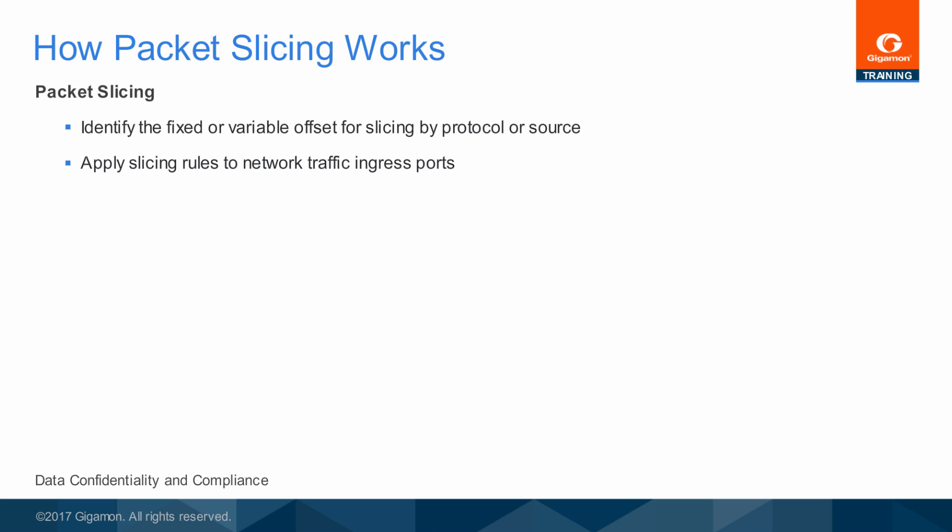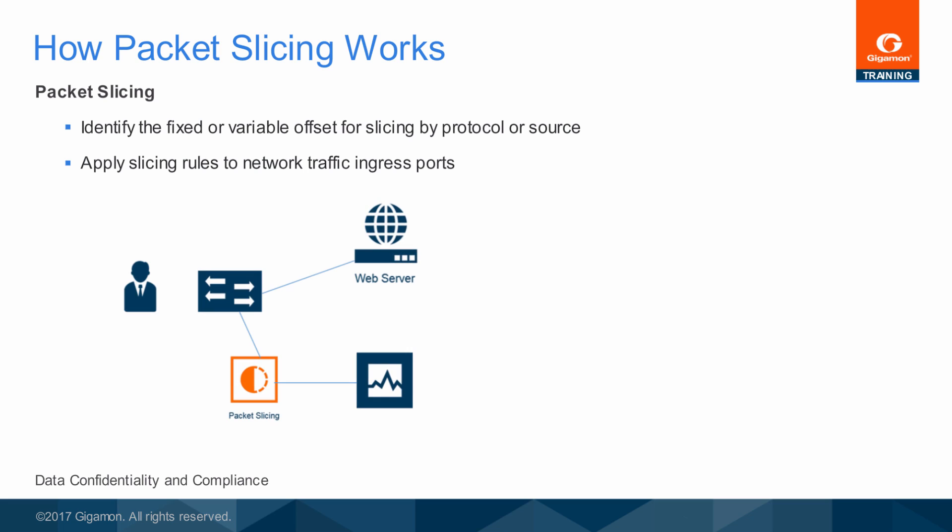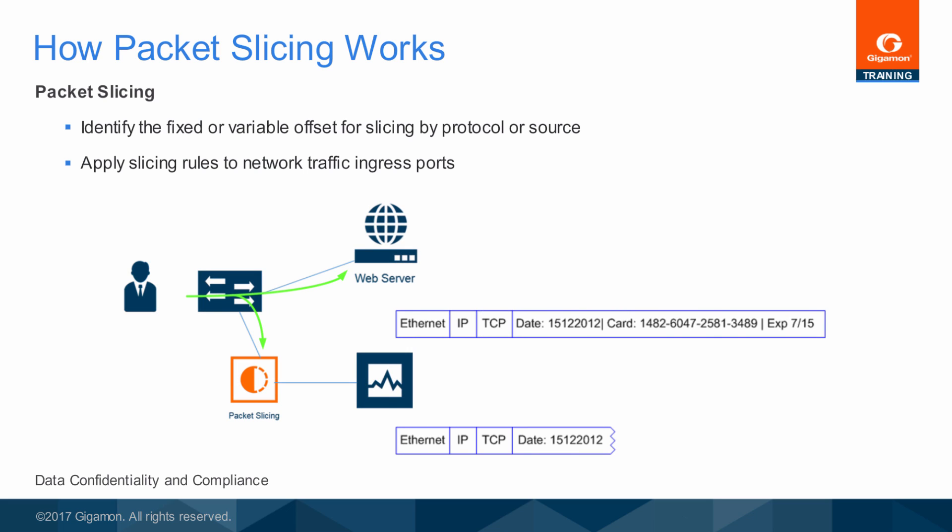This way, users can slice packets without having to rely on a fixed offset. This feature accommodates packets which may have VLAN or other tags present. Because they are smaller, sliced packets are analyzed more efficiently and require less disk space to store. Tools process fewer bits and have more room to store the important portions of each packet, enhancing storage and analysis performance.